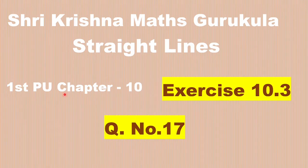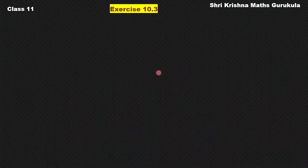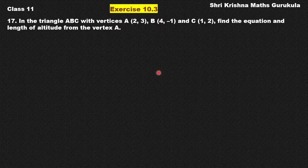Hi students. In this video, we will be solving question number 17 from exercise 10.3 from the chapter Straight Lines, which is the first PU syllabus. You can go to playlists and look for straight lines — in that folder you will find all the sums and derivations related to this chapter. Now let us check question number 17.